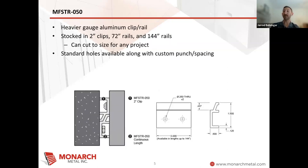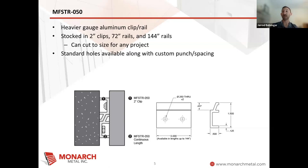On the aluminum side is a heavier gauge Z-Clip that we use, occasionally for the exterior side but mostly for interior projects, which is our 050. This is similar to sizes that we offer in some of our other aluminum systems: a two-inch clip, a 72-inch rail, and a 144-inch rail, with the ability to cut and punch. We'll go over later how we can use these for a specific type of Kyle anchor or undercut anchor, which is sometimes used in a rain screen system where you're going to bring out the system a little bit further but still want this half-inch projection behind panels.